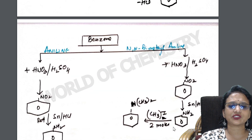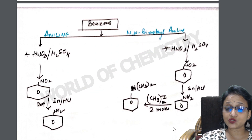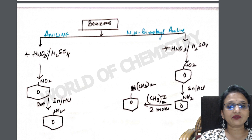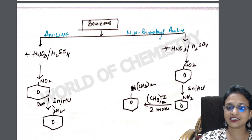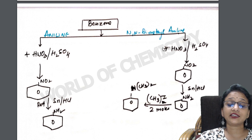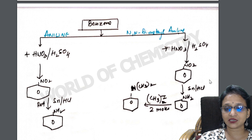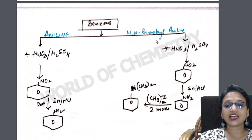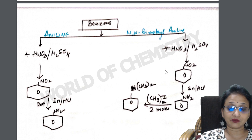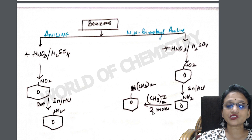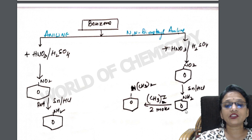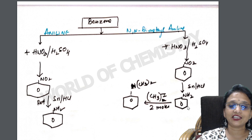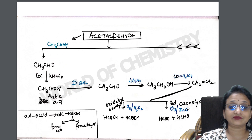Benzene to aniline and benzene to N,N-dimethylaniline: first convert benzene to nitrobenzene using nitrating mixture, then reduce nitrobenzene to aniline. For N,N-dimethylaniline: from aniline, introduce two moles of methyl iodide (or dimethyl iodide) — the nitrogen attaches to the alkyl groups and HI is released, giving N,N-dimethylaniline.